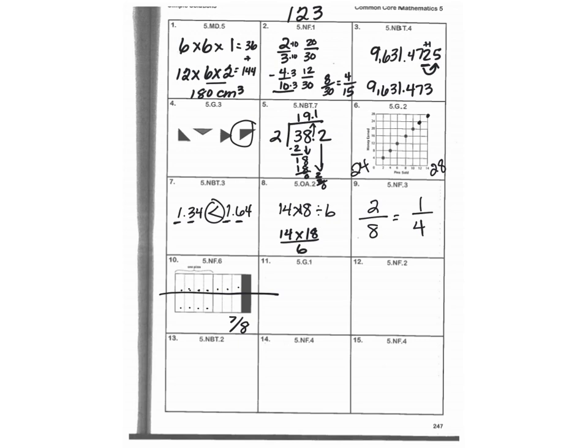What ordered pair represents point U? Well, I'm going to walk along the bottom to the 2. And since the U is right there, that means that your Y coordinate is going to be 0.